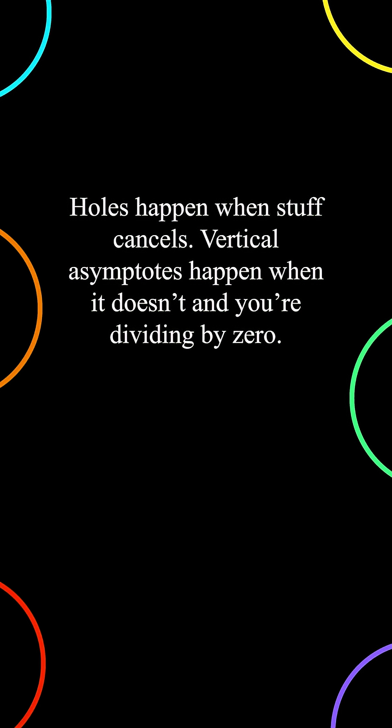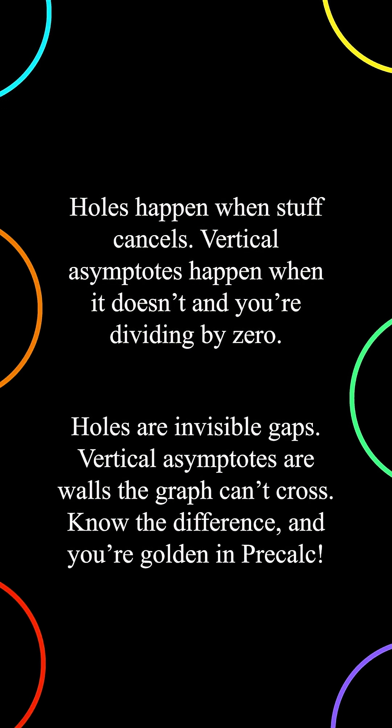Holes happen when stuff cancels. Vertical asymptotes happen when it doesn't and you're dividing by zero. Holes are invisible gaps; vertical asymptotes are walls the graph can't cross. Know the difference and you're golden in pre-calc.